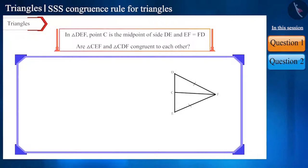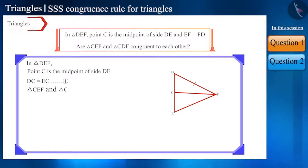Observe the diagram carefully. In triangle DEF, point C is the midpoint of side DE. That's why side DC and side EC are equal. Now observe triangle CEF and triangle CDF. We are given that side EF is equal to side DF and CF is the common side.